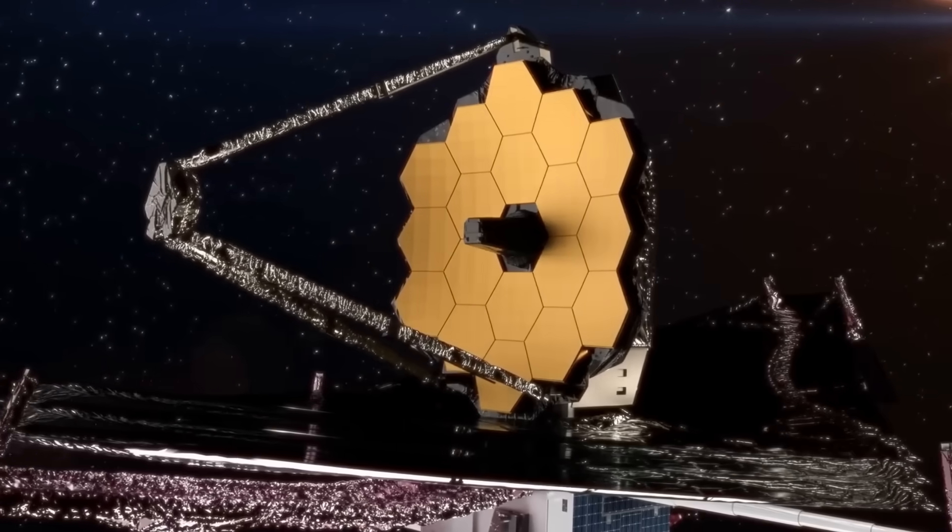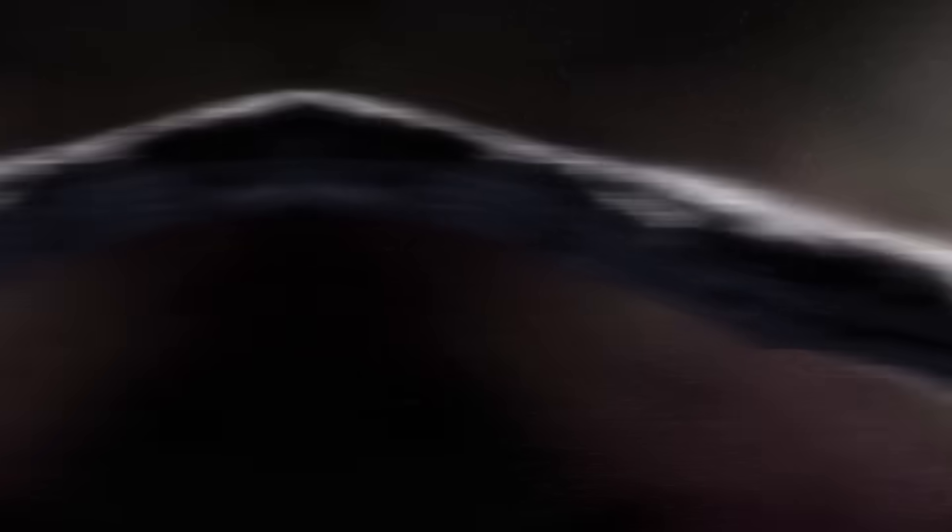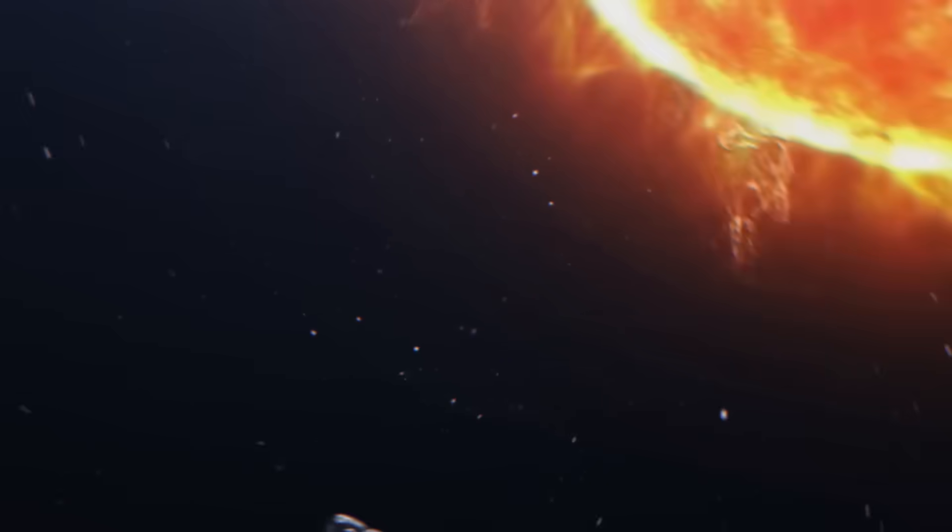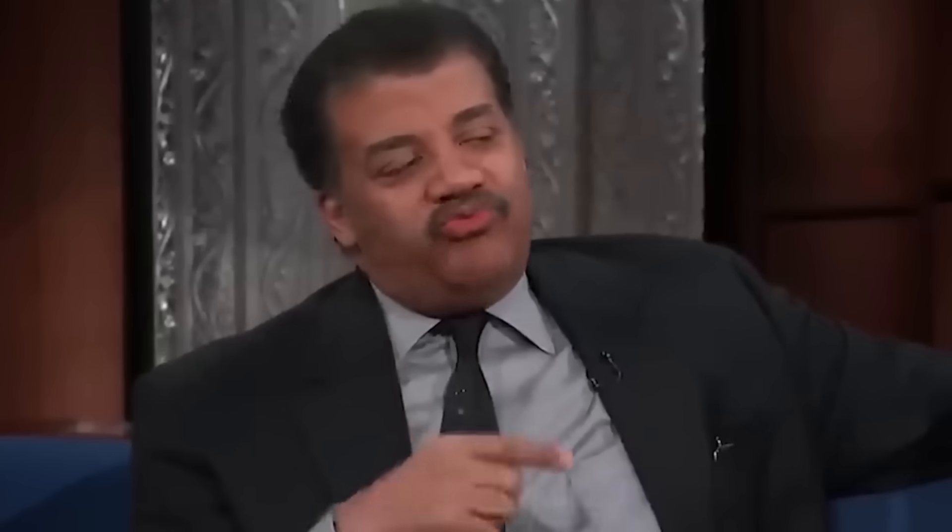These aren't mere fragments or debris. They're organized. They're moving with eerie precision, and they might not be passive observers. Tonight, we follow the story behind this impossible return. What is Oumuamua? Why has it come back? And what are these strange companions orbiting silently beside it? What you're about to discover may change how you see the universe, forever.